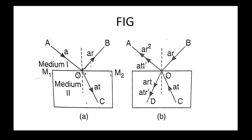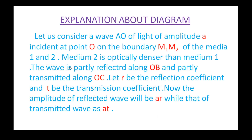At is the amplitude of the transmitted ray. T-prime is the transmission coefficient for the reverse direction. Hence it becomes At into T-prime.